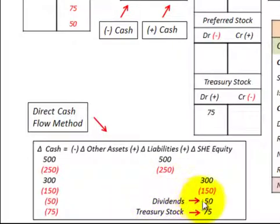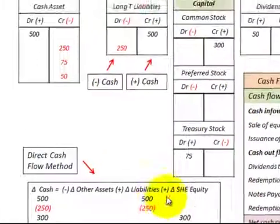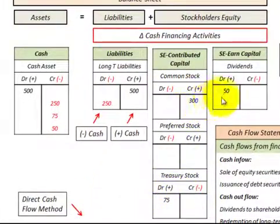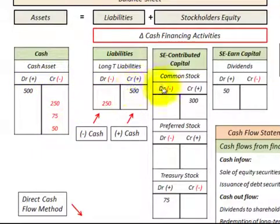We have to be careful when we get to our contra accounts, like dividends — the cash we pay to our shareholders. An increase in shareholders' equity dividends would be a reduction in the change of cash. The same for treasury stock: when we buy it back and increase our shareholders' equity, that would reduce our cash. Looking at our T-accounts, we have dividends as earned capital, and contributed capital includes common stock, preferred stock, and the contra account treasury stock. Liabilities show bonds issued to bondholders, and you can see the effect on our cash account for each debit and credit.